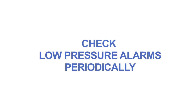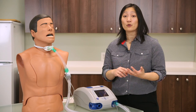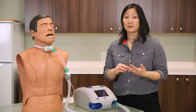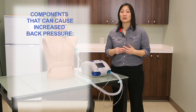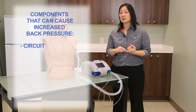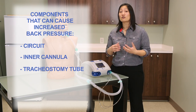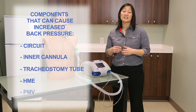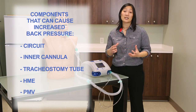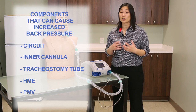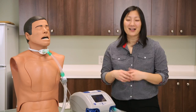The low pressure alarm should be checked periodically on your ventilator for both your bedside and chair ventilator. If you make any changes to your ventilator by adding a Passy Muir valve or an HME into the circuit, you should also check your low pressure alarm, as these things could create increased back pressure and change your low pressure alarm settings.